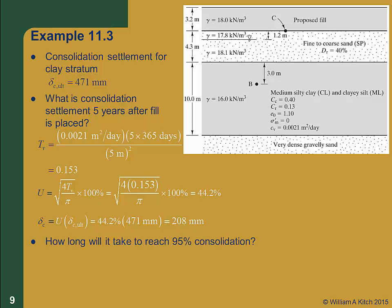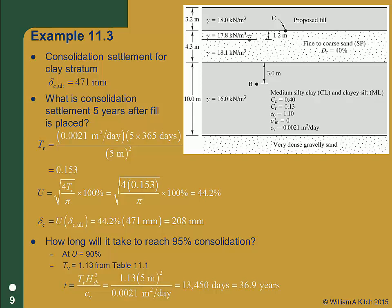Another question we might ask is how long it will take to reach 95% consolidation. Using Table 11.1, we find that the time factor T_v for 90% consolidation is 1.13. We then use our equation for the time factor to calculate the actual time: 1.13 times (5 m)² divided by C_v of 0.0021 m²/day, which gives 13,450 days, or 36.9 years. An important point: the theoretical time to 100% consolidation is infinity. It's not very helpful to tell clients that consolidation will take infinite time, so we generally assume that the theoretical time to 95% consolidation represents complete consolidation.